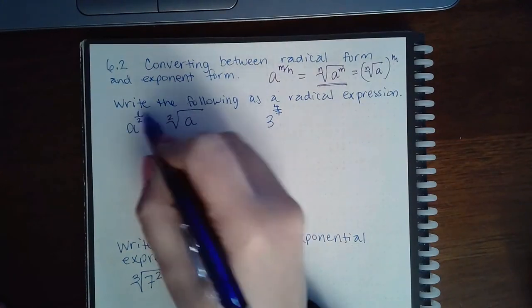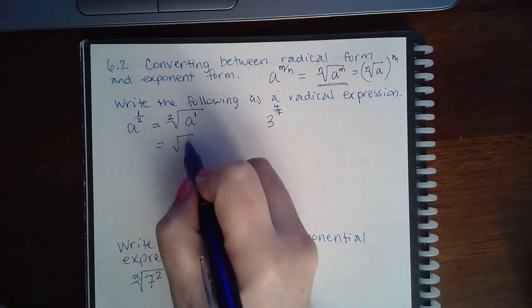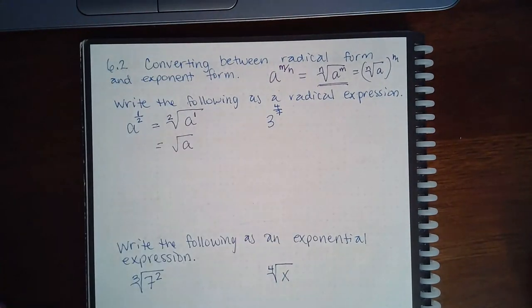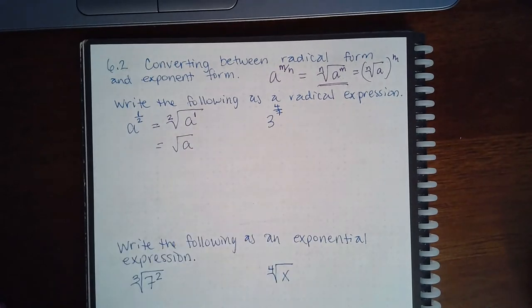And then you can clean that up just by writing the square root of a, because the two is already implied and the power one is already implied when nothing is written there.